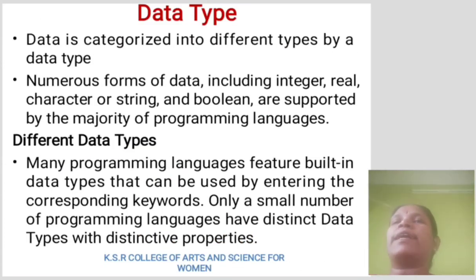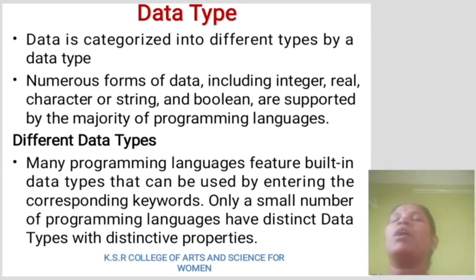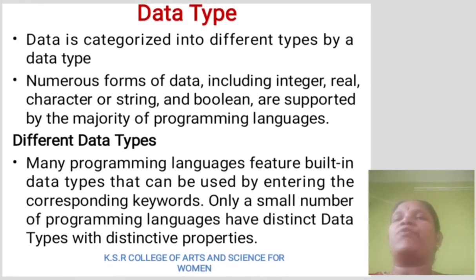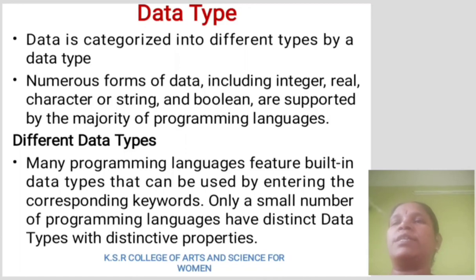Data type. Data is categorized into different types of data types. Numerous forms of data including integer, real, character, string, and boolean are supported by the majority of programming languages. Many programming languages feature built-in data types that can be used by entering the corresponding keywords. Only a small number of programming languages have distinct data types with their distinctive properties.